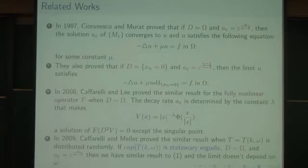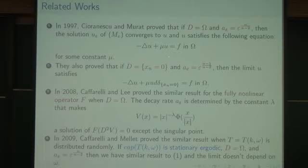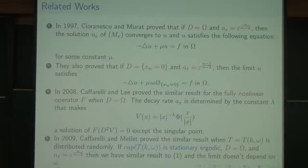Here are some historical remarks. In 1997, Chiadò Piat, Dal Maso, and Defranceschi proved that if the obstacle oscillates on the whole domain and if we take the decay rate like this, then the solution converges to u satisfying this equation — there is a strange term in this problem also. They also considered the obstacle problem when gamma looks like this and chose a_epsilon accordingly; there is a limit and u satisfies this equation, and they also observed the strange term behavior.